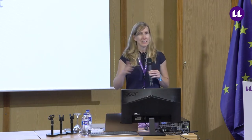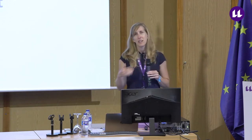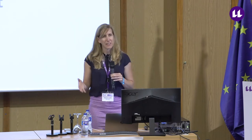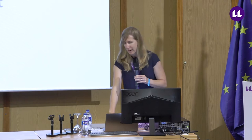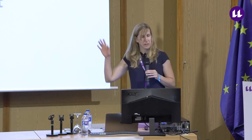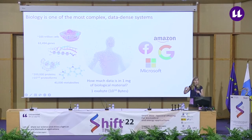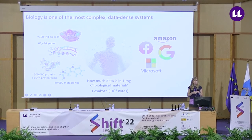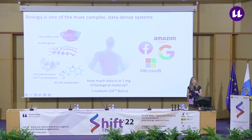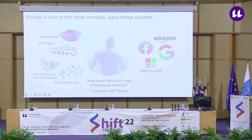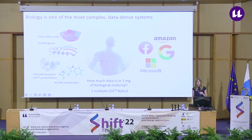If you were to take today's top-of-line hard drives, which are about 20 terabytes, you'd have to stack them up to three times the height of Mount Everest to reproduce the amount of data in biological material. The human body has about a trillion cells, over 63,000 genes, about 200,000 proteins with different post-translational modifications giving rise to roughly 10 to the 130 proteoforms, and over 40,000 metabolites. To understand human, animal, and environmental health, we need to quickly read out all the data in these biomarkers.